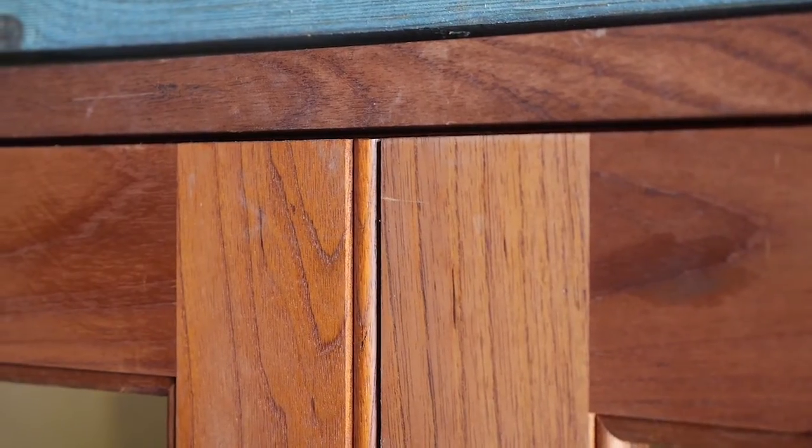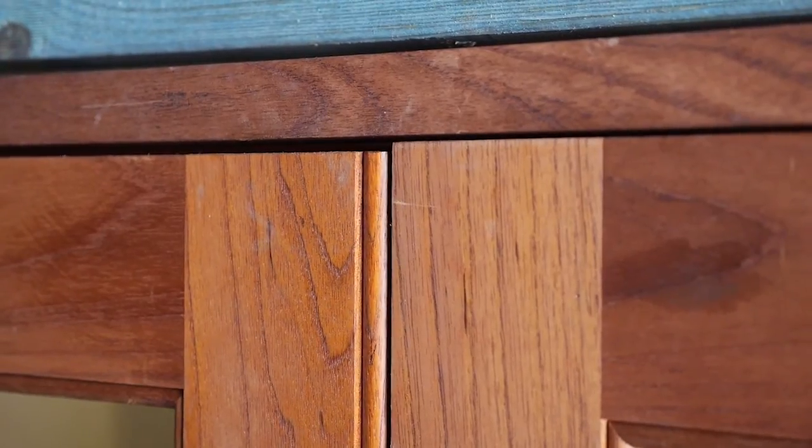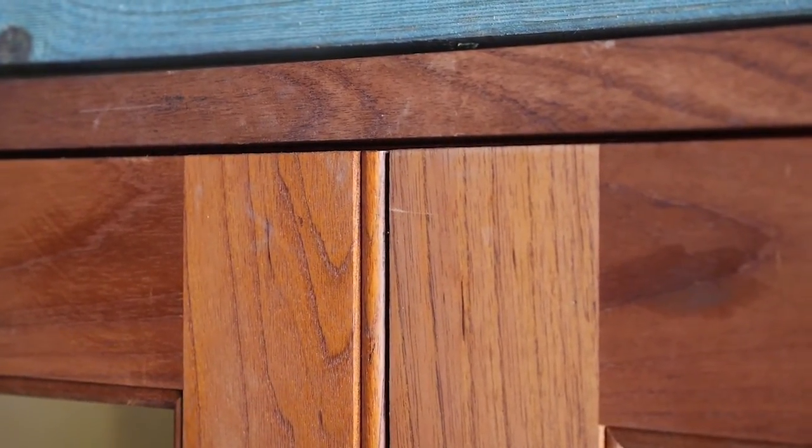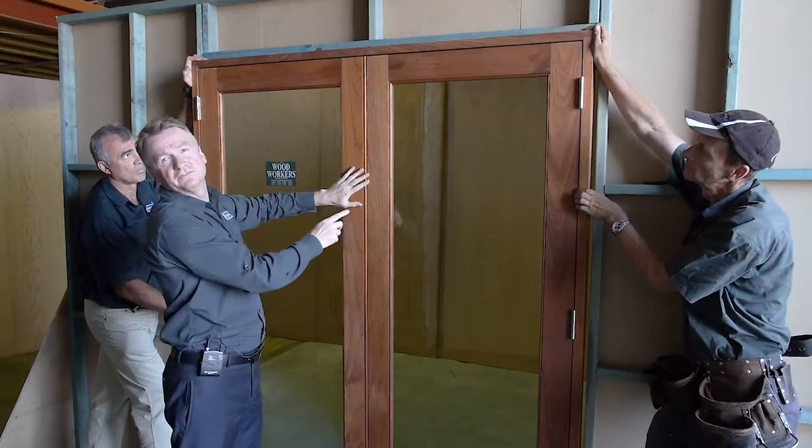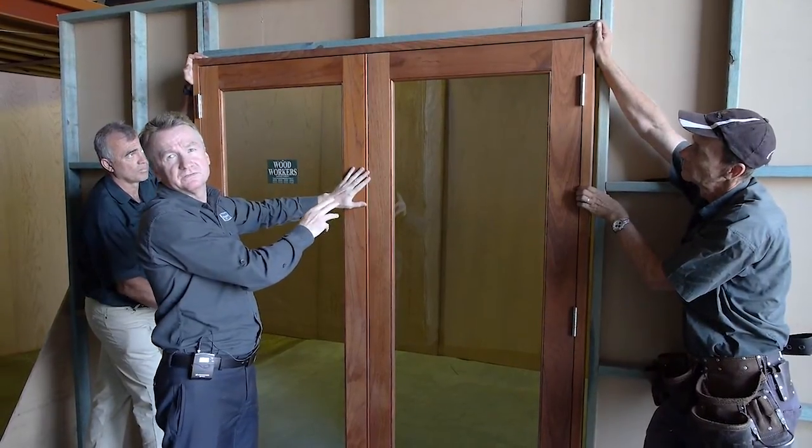If we put the frame in the opposite direction, the doors look out of square again. Once again, we put it back into the centre. If the frame's fitted off correctly, then the doors are actually fitted perfectly.